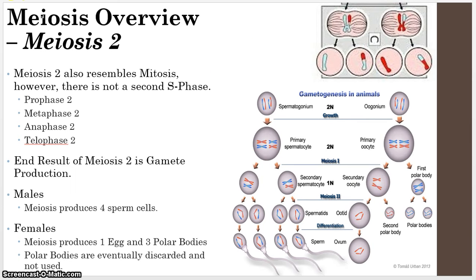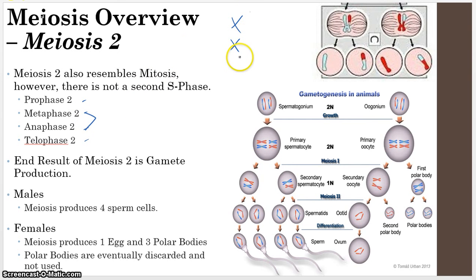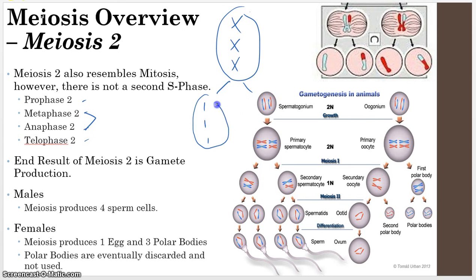That's important for meiosis two, which has the same steps again — prophase, metaphase, anaphase, and telophase. Meiosis two looks a lot more similar to mitosis because now in metaphase and anaphase your sister chromatids line up in the middle of the cell, and when they divide you only end up with one copy of each.